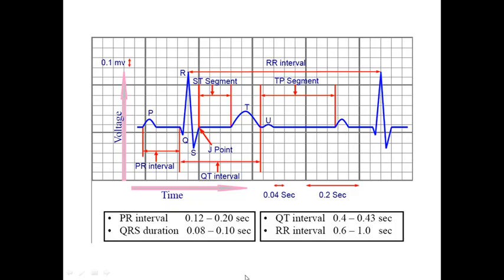Here is a summary of all normal durations: PR or PQ interval, QRS duration, QT interval, RR interval, and others. You have to remember all these intervals in order to assess ECG correctly.